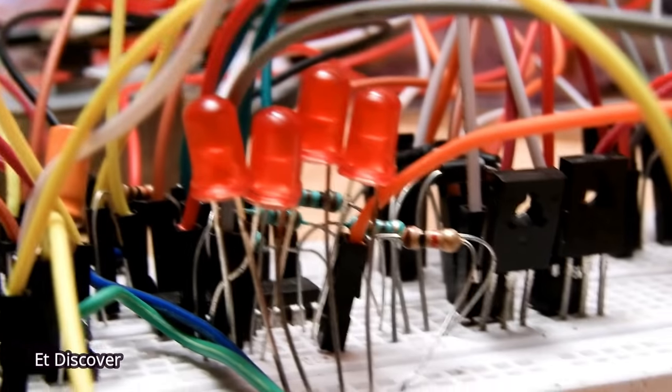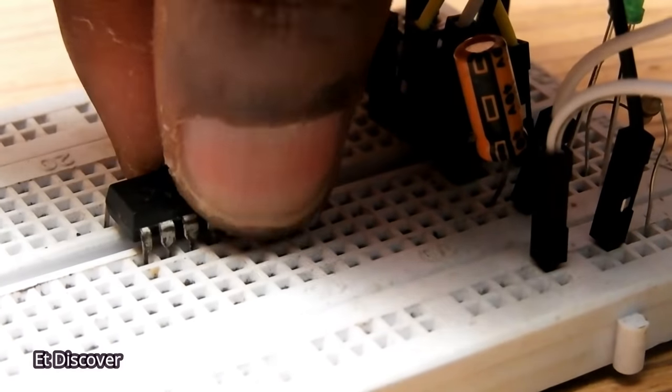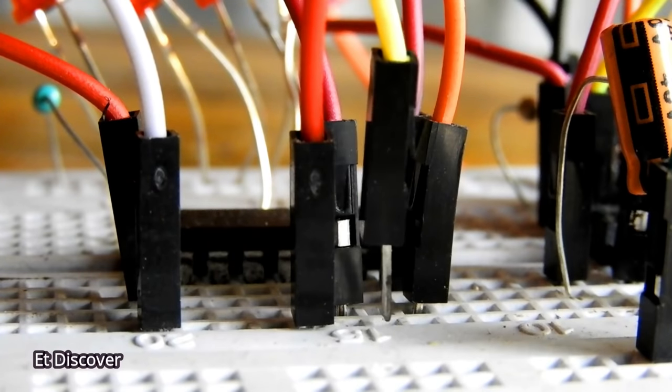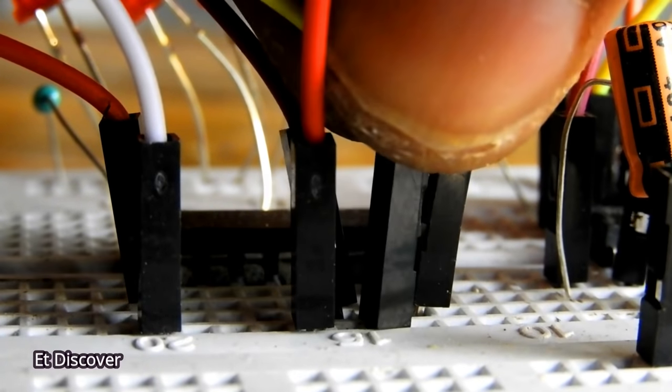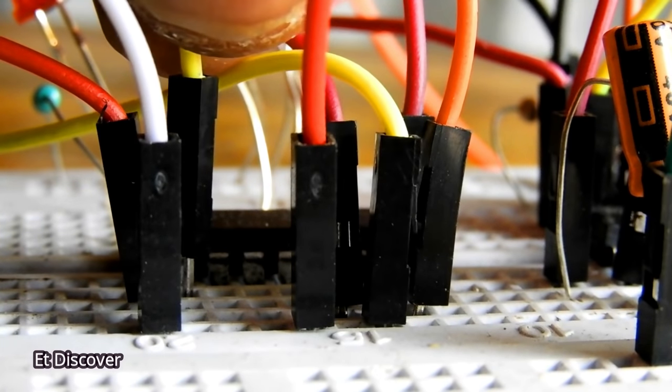So now we have to get the four sequences from it. So I put a 4017 IC on the breadboard. We can get maximum 10 outputs from this IC, but we need only four. So I short the pin 15 and pin 10.